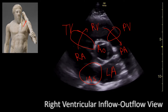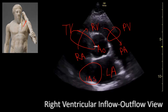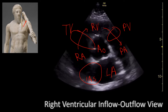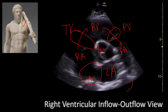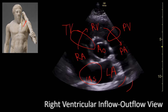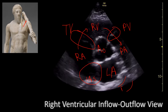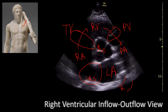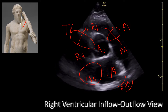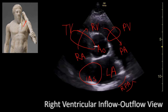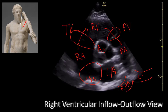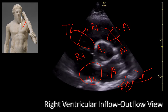In some patients you can actually see the bifurcation of the pulmonary artery right behind the heart. One will be the right pulmonary artery and the other will be the left pulmonary artery.